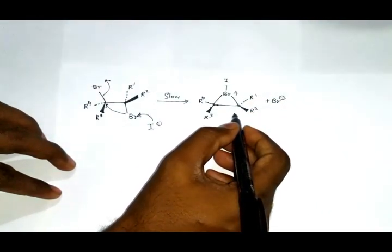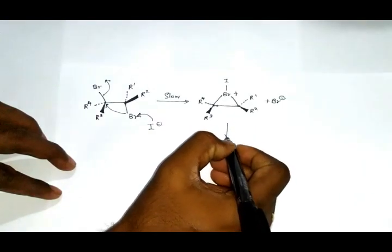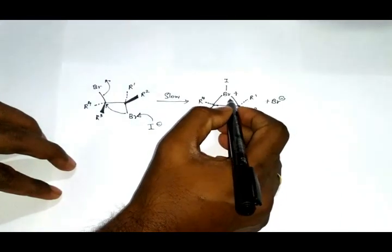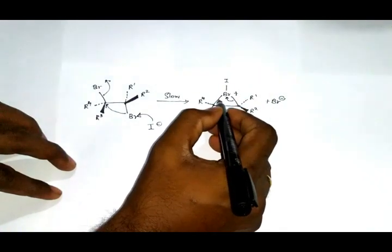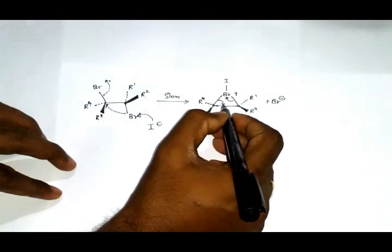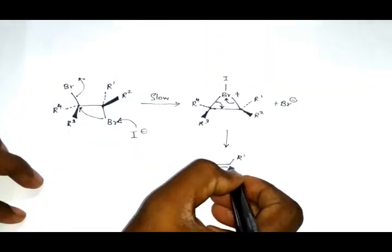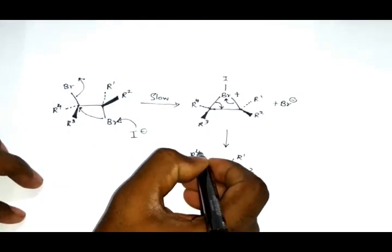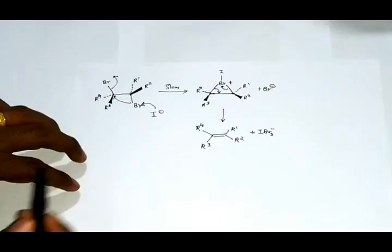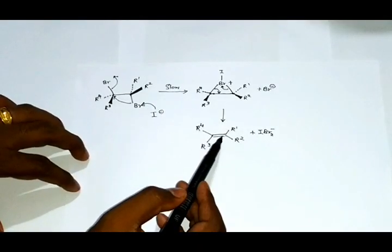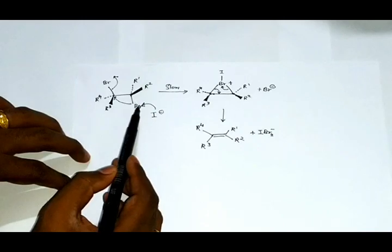This will further undergo reaction. This bond will come on to here, this bond will fall here, leading to the formation of a double bond. The two important conditions to get the alkene is these two bromine groups should be vicinal and they should be anti-periplanar to each other.